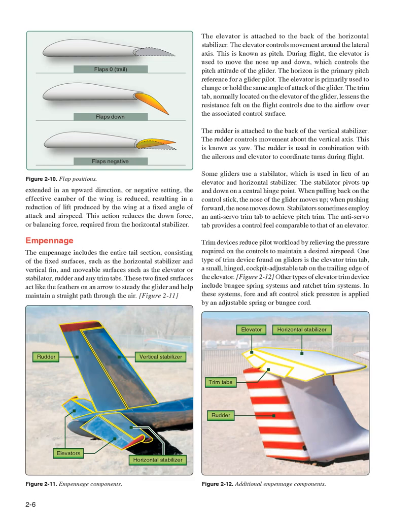The empennage includes the entire tail section, consisting of the fixed surfaces such as the horizontal stabilizer and vertical fin, and movable surfaces such as the elevator or stabilator, rudder, and any trim tabs. These two fixed surfaces act like the feathers on an arrow to steady the glider and help maintain a straight path through the air. The elevator is attached to the back of the horizontal stabilizer. The elevator controls movement around the lateral axis, known as pitch. During flight, the elevator is used to move the nose up and down, which controls the pitch attitude of the glider.